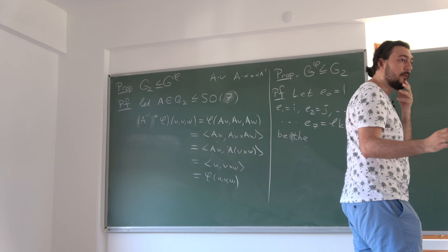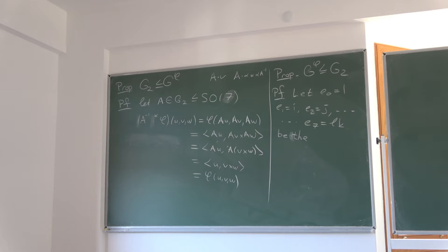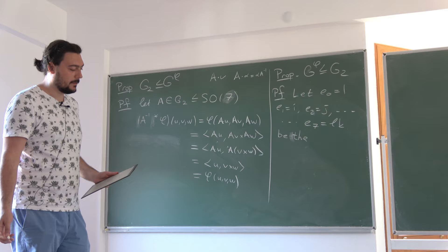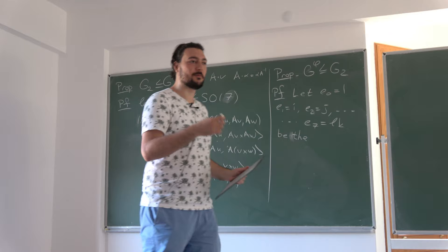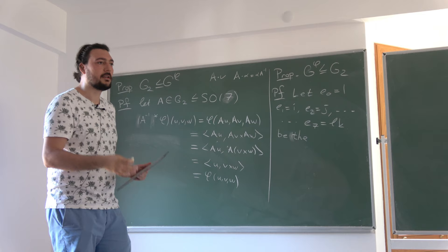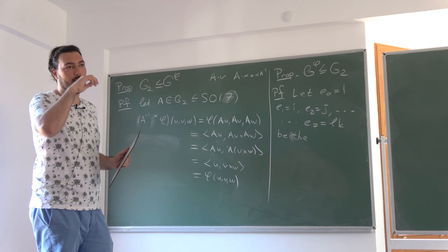Since Spin(7) acts transitively on S⁷, and fixing the first vector gives G2 as the stabilizer subgroup, G2 already acts on 2-frames. Combining with the transitive action on the first vector, you can get the other two vectors by an action of G2. Regarding the stabilizer of the action on 3-frames: as soon as an element fixes the first vector it's in G2, and then what we're looking at is A in G2 (as a subgroup of Spin(7)) such that A takes (i, j) to (i, j). The fact that this is S³ follows from our earlier discussion of G2.